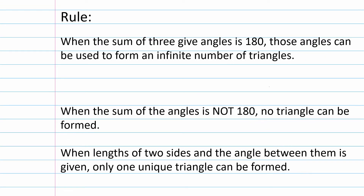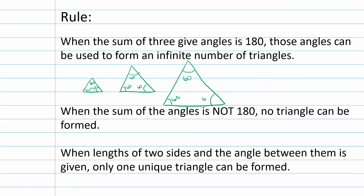When the sum of three given angles is 180 degrees, those angles can be used to form an infinite number of triangles. If all we know are the angles but not the side lengths, I could make a tiny triangle with angles 60-60-60, or a bigger one, or a gigantic one — all still 60-60-60. There are infinite triangles possible. However, when the sum of angles is not 180 degrees, no triangle can be formed at all.